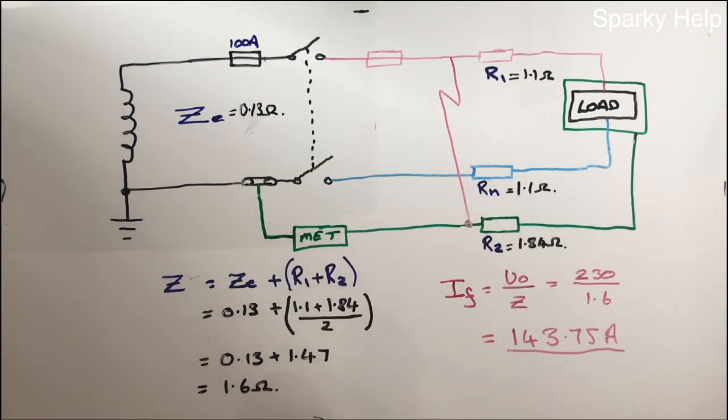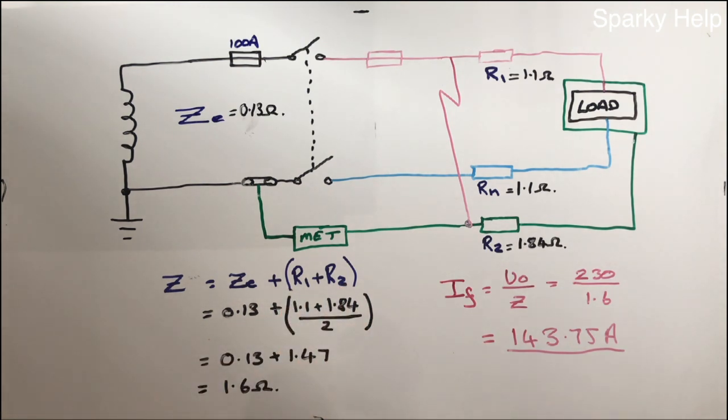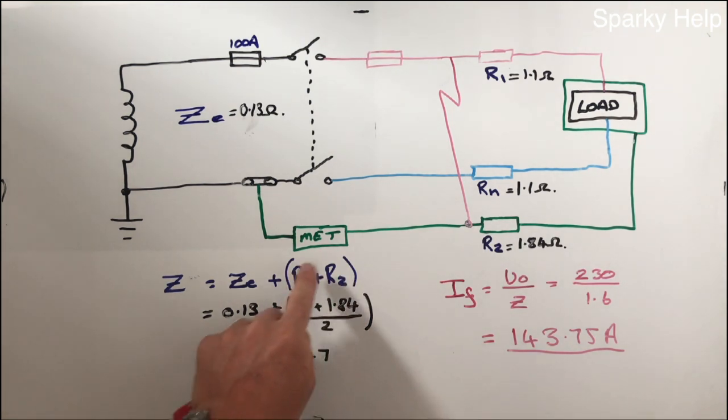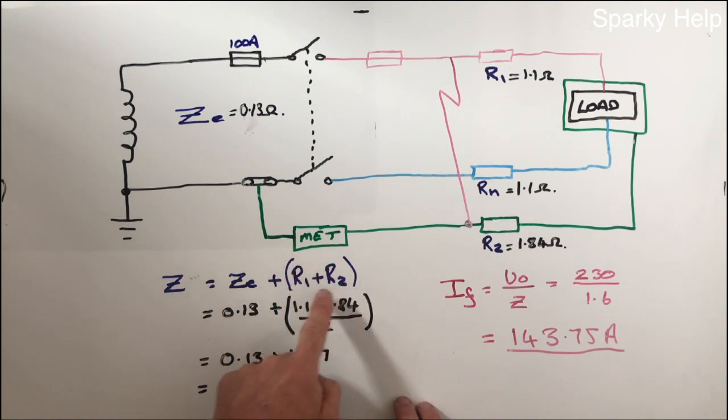Remember all of these calculations that we've just carried out here have not taken temperature into consideration. If you do 2391 test and inspection, then you do take temperature consideration and further on in the qualifications that you may well be doing. But these are just basic calculations without temperature. Temperature, just a curiosity, would actually be affecting these two components here.